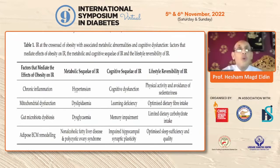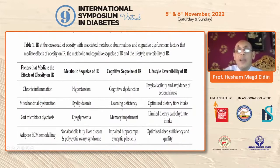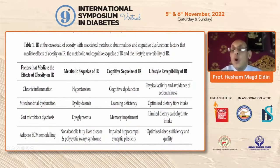This demonstrates that insulin resistance is at the crossroad of obesity and associated diseases. The factors mediating effects of obesity include chronic inflammation, hypertension, dyslipidemia, dysglycemia, non-alcoholic fatty liver disease, and cognitive dysfunction including learning deficits and memory impairment. There is a possibility to reverse or ameliorate these effects through lifestyle — physical activity, optimized dietary fat, limited dietary carbohydrates, and optimized sleep.